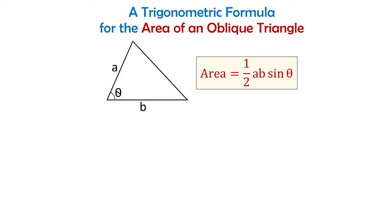This formula tells us that if in a triangle we have two sides a and b and angle θ which is the angle included between these two sides, then the area equals one half times side a times side b times sine of angle θ.